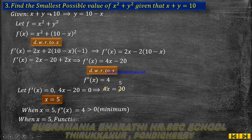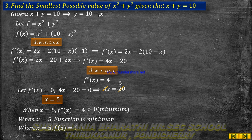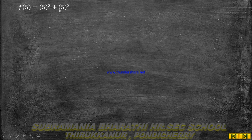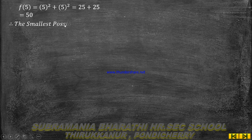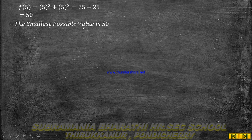At x equals 5, the given function has its smallest value. The y value is 10 minus x equals 10 minus 5 equals 5. So x squared plus y squared equals 5 squared plus 5 squared equals 25 plus 25 equals 50. Therefore, the smallest possible value is 50. Thank you.